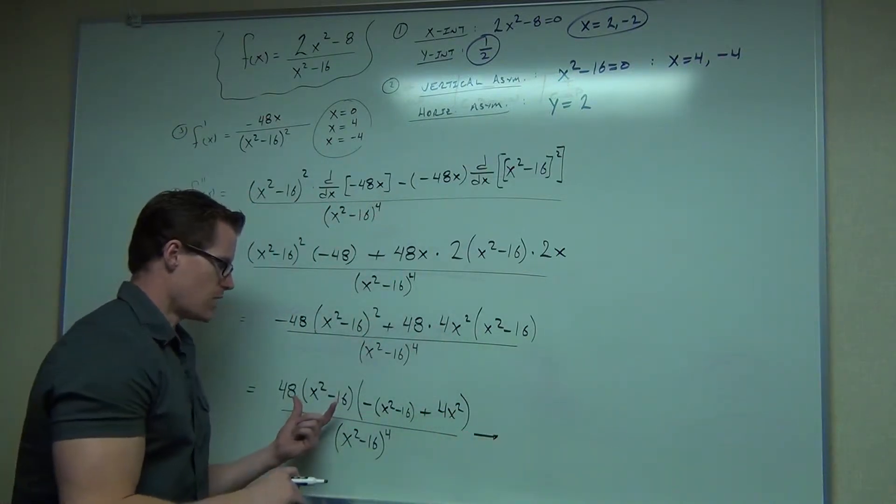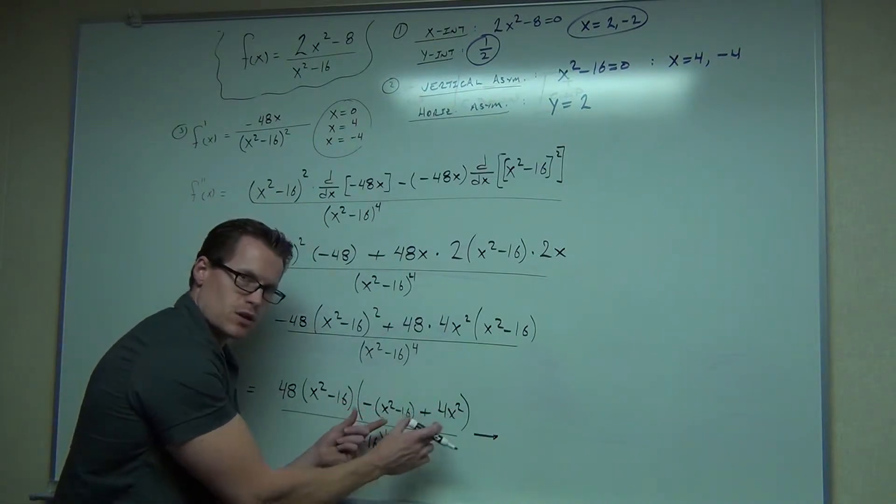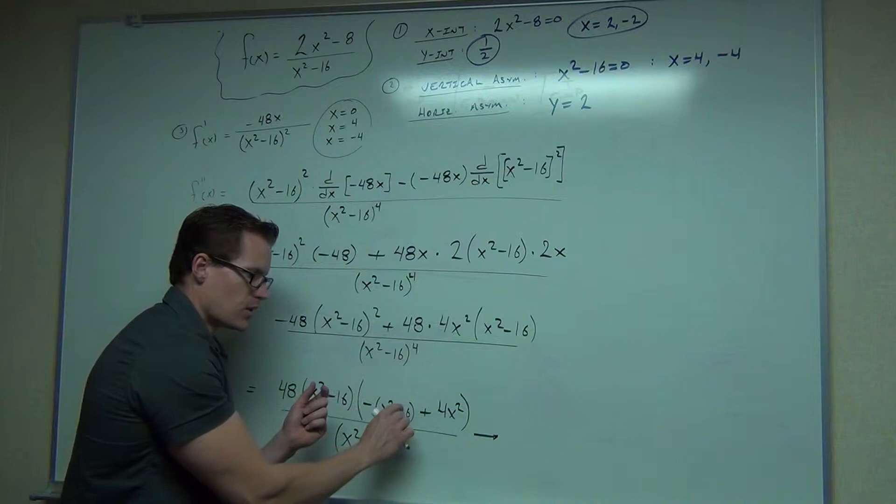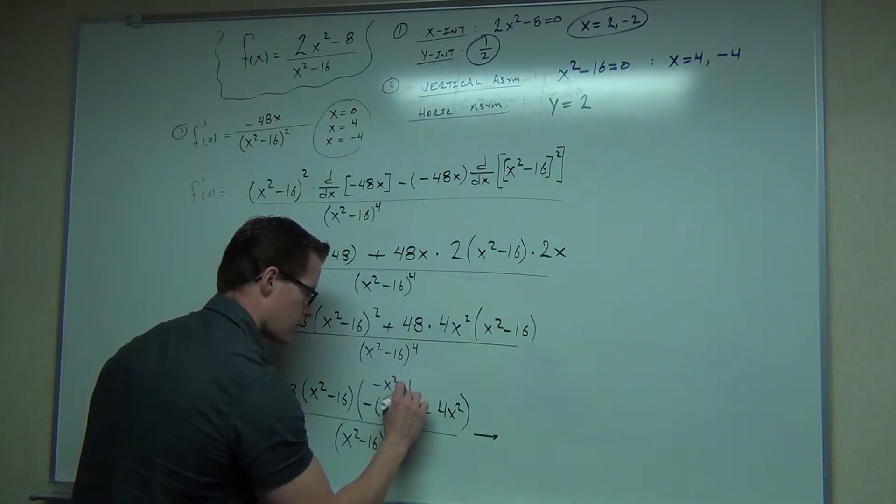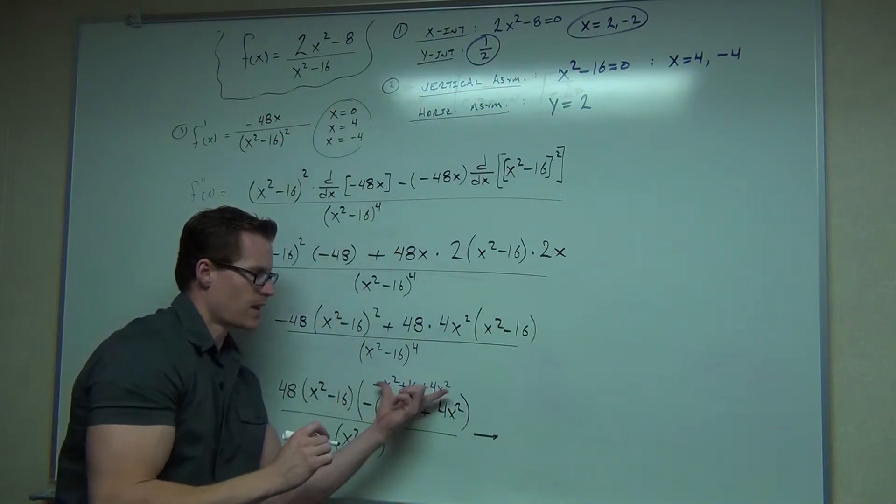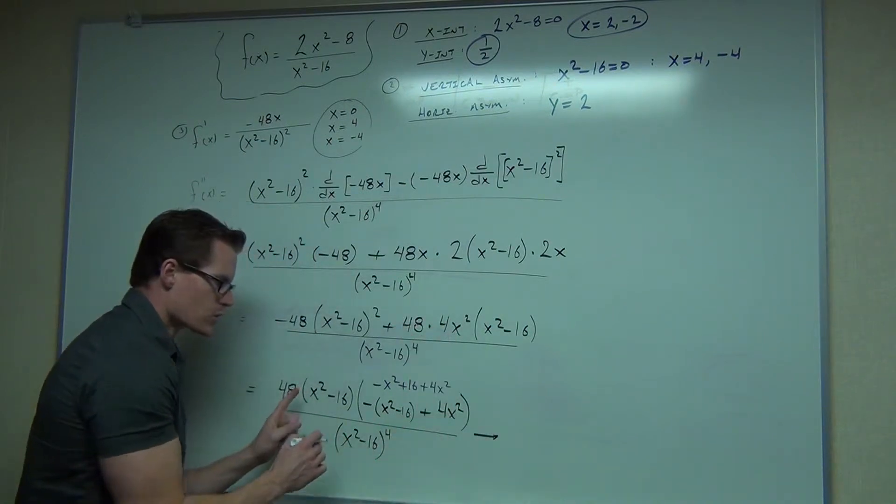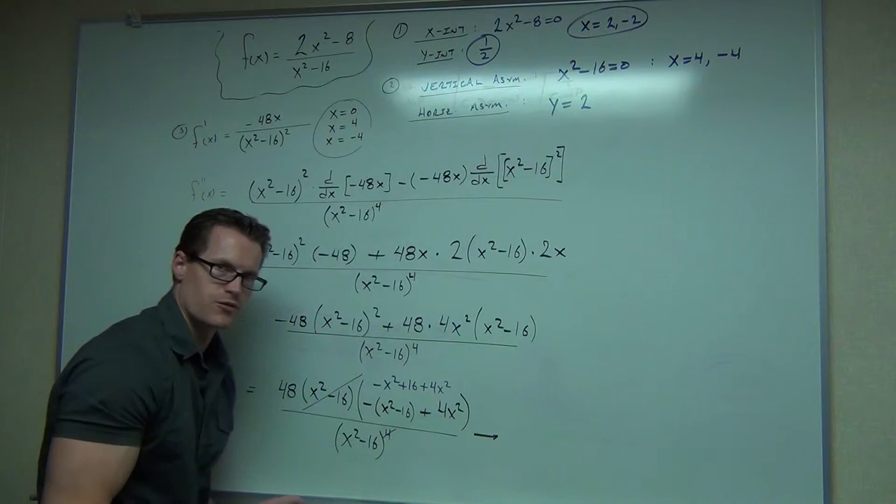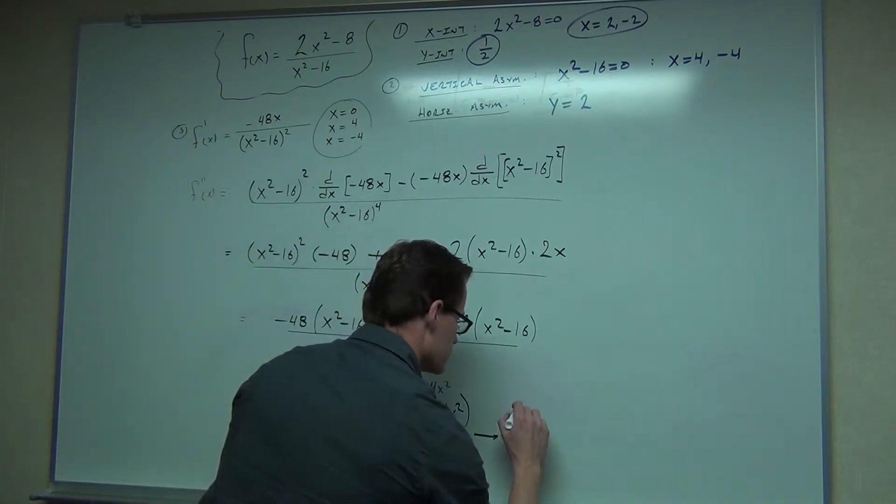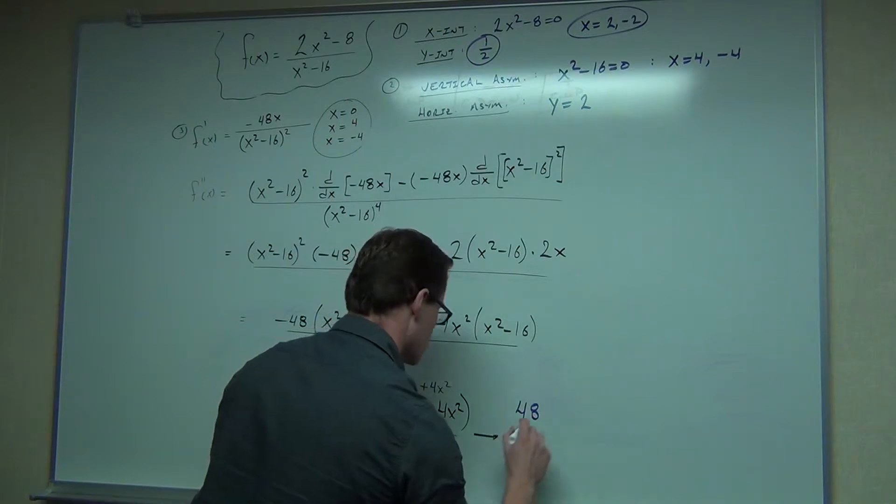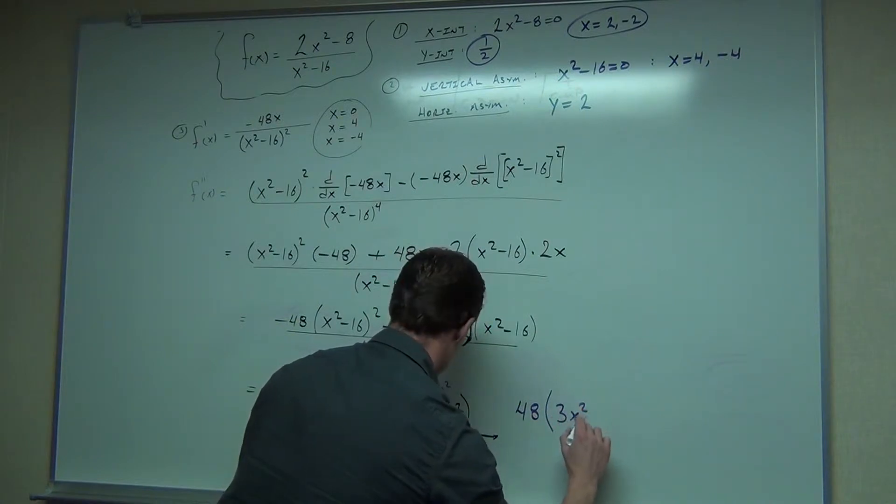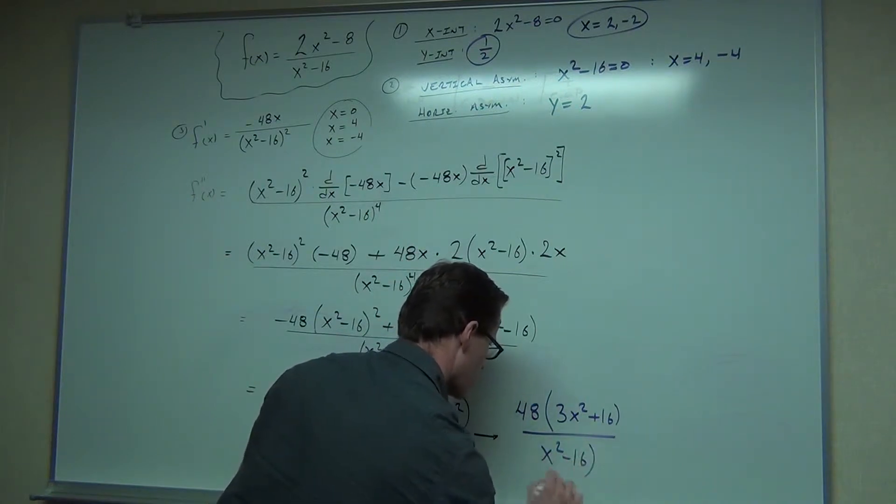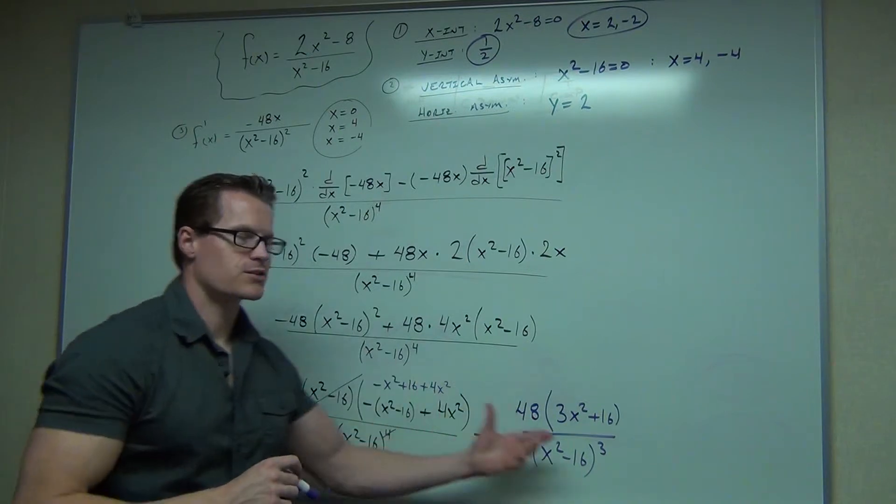Almost done. One last step. What we're going to do is simplify this a little bit. If you look at that, that's negative x squared plus 16 plus 4x squared. That's 3x squared plus 16. Also, we're going to simplify out one factor of x squared minus 16. So gone. Part of that's gone. That's our second derivative. That's about as good as we can make it.